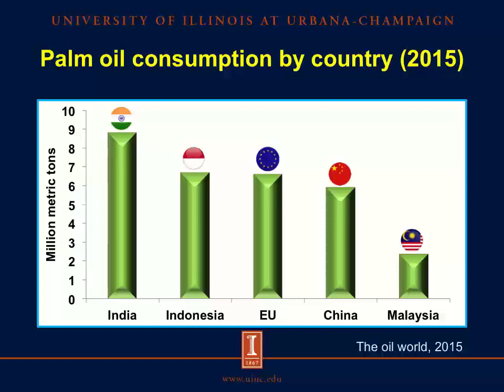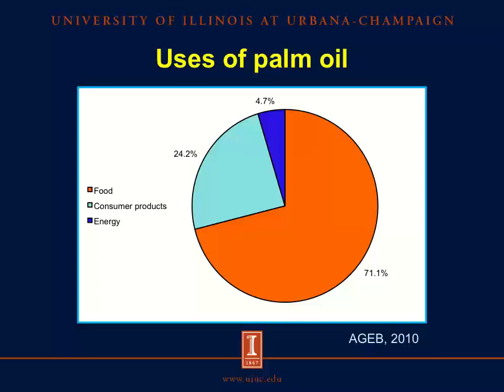So what is palm oil used for? 71% of palm oil is used for food: cooking, margarine, processed food, chocolate, among others. 24% is dedicated to consumer products such as soap, cosmetics, detergents, candles, feedstock, and so on. And 5% is used as a source of energy, electricity, fuel, and heating.